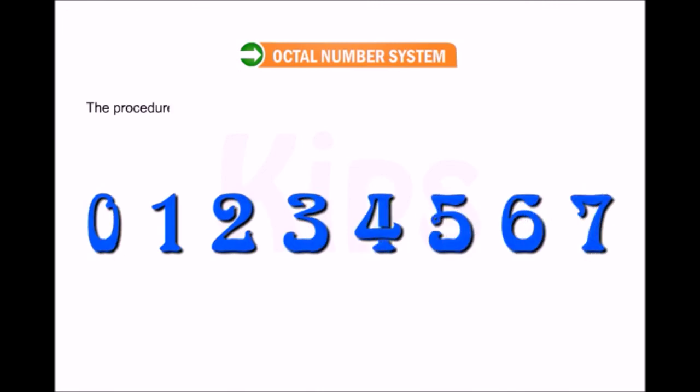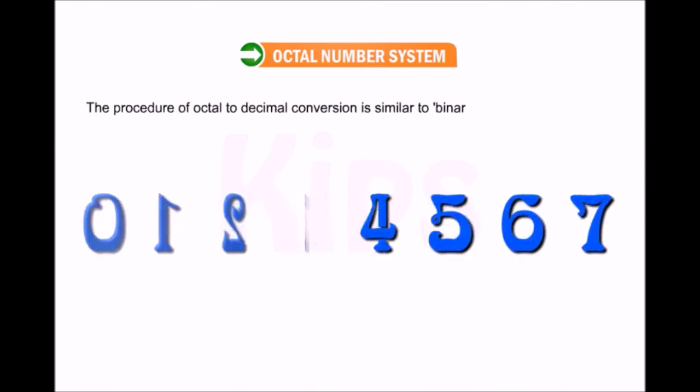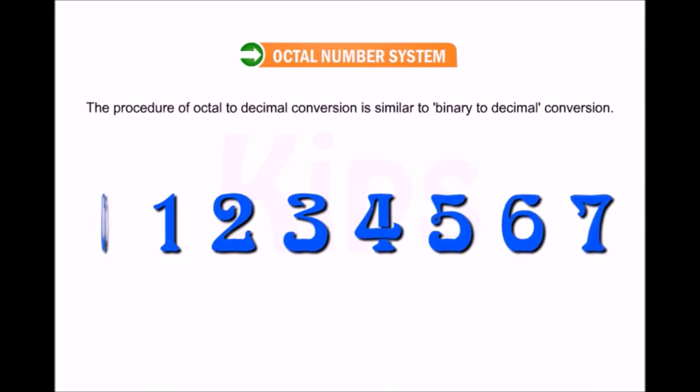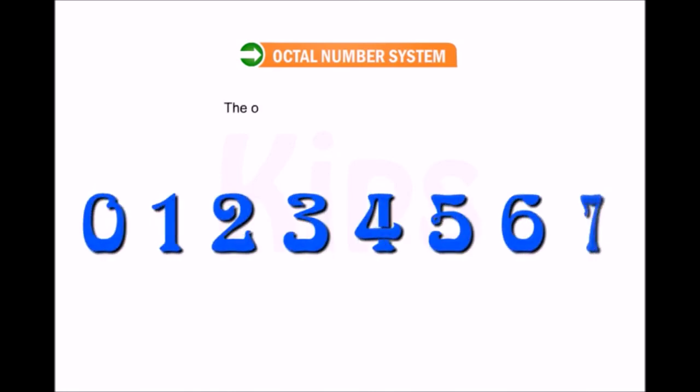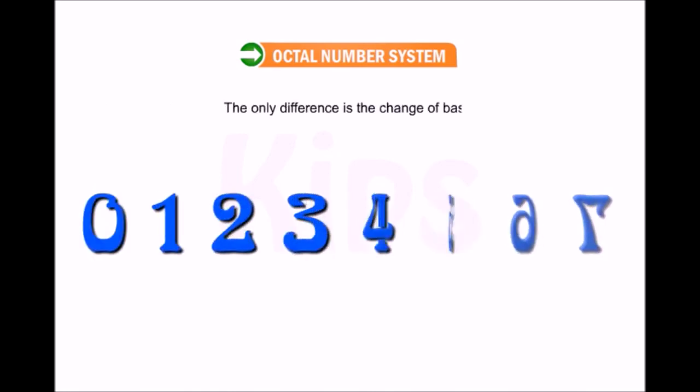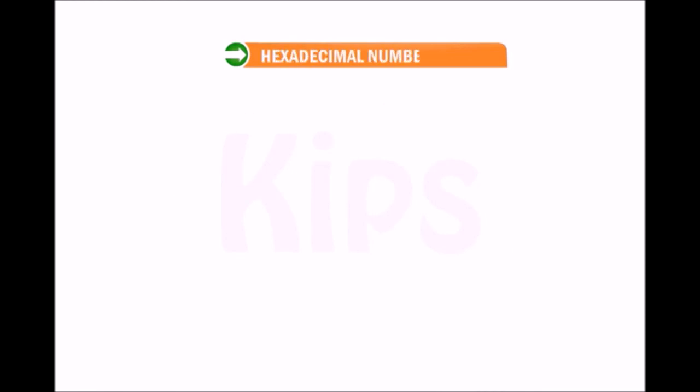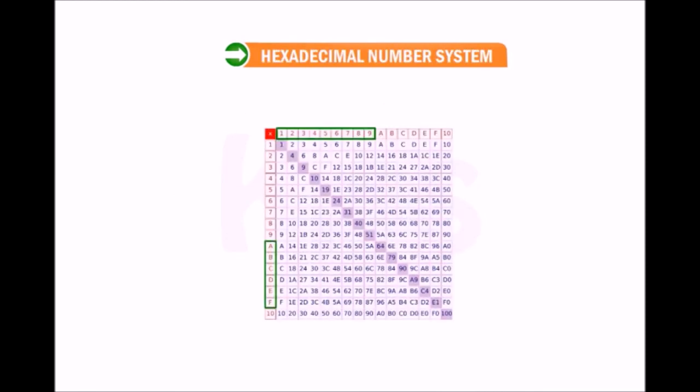The procedure of octal to decimal conversion is similar to binary to decimal conversion. The only difference is the change of base. Hexadecimal number system: this number system contains 16 digits and therefore has the base 16. It uses the digits 0 to 9 and A to F.